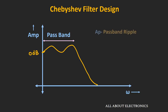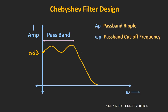The first parameter is the passband ripple — that is the maximum allowable ripple in the passband. The second parameter is the passband cutoff frequency. For filters with a flat passband, like the Butterworth filter, the cutoff frequency is defined as the frequency where the output is 0.707 times the maximum value, also known as the 3 dB frequency. For filters with ripple in the passband, the cutoff frequency is defined as the frequency beyond which you will not see any ripple. This frequency is known as the passband cutoff frequency, ωp.